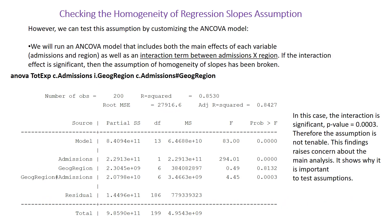Once we run ANCOVA, then we need to check the homogeneity of regression slopes assumption. We can test this assumption by customizing the ANCOVA model. We will run an ANCOVA model that includes both the main effects of each variable, that is admissions and region, as well as an interaction term between admissions and region. If the interaction effect is significant, then the assumption of homogeneity of slopes has been violated.